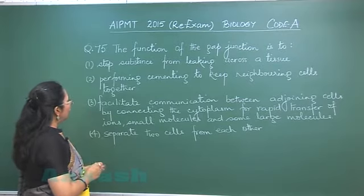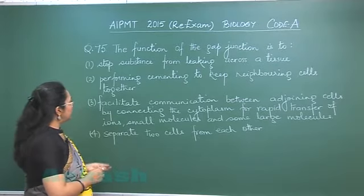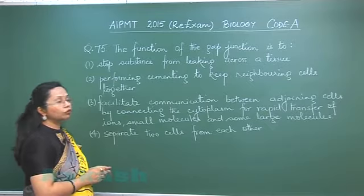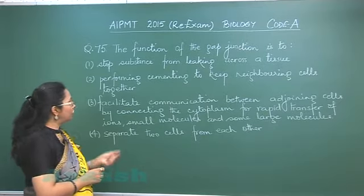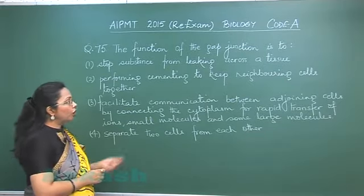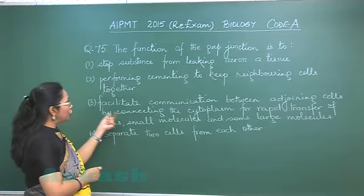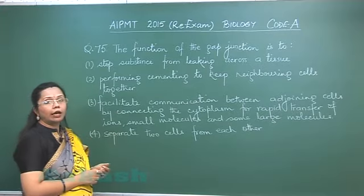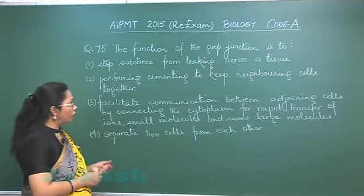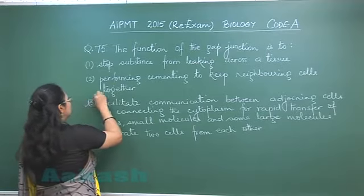Option 3: facilitate communication between adjoining cells by connecting the cytoplasm for rapid transfer of ions, small molecules, and some large molecules. This is what a gap junction functions for. So our answer is option 3.